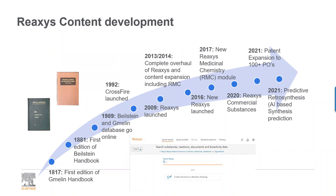The Reaxys Additional Chemistry Module (RMC) was added, then commercial substances two years ago, and last year we launched patent expansion. Now we have coverage of 105 patent offices. We just crossed 30 million patents a month ago — we've doubled the number of patents compared to our nearest competitors. We also introduced a new module called predictive retrosynthesis, which predicts synthesis routes based on artificial intelligence and machine learning. But you don't have access to this module, so that's not for today.